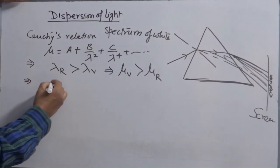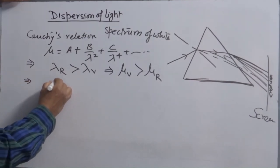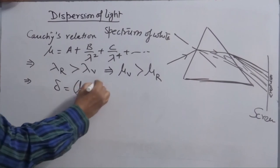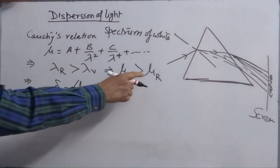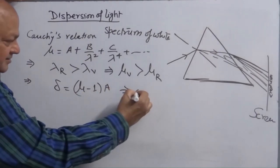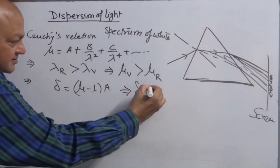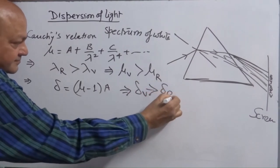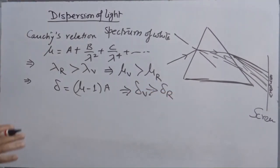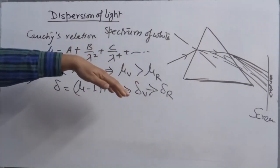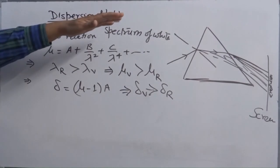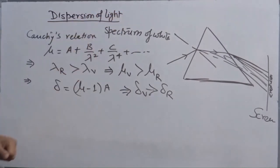Now we know relation delta is equal to mu minus 1 into A. So delta violet will be greater than delta red. Violet color deviates maximum. That's why violet color is appearing at the bottom of the spectrum. That's how white light gets dispersed.